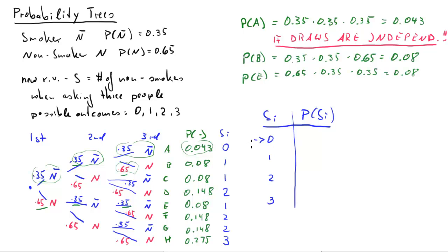So now, if you want the probability that S is equal to 0, we only have one of the eight possible branches. We have the outcome.